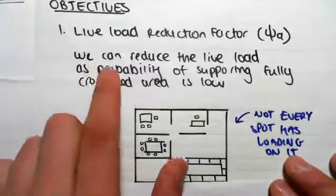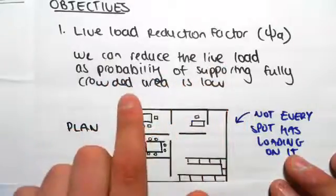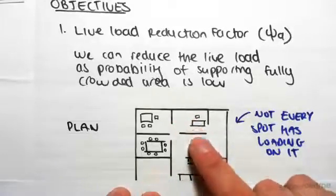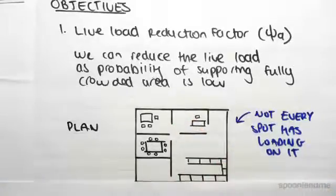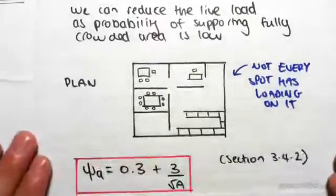we can do is we can reduce the live load as the probability of supporting a fully crowded area is low. So all this is saying is that because not every spot is actually going to be loaded with, say, a 3 kPa live load, we can artificially reduce this live load. So this is seen in section